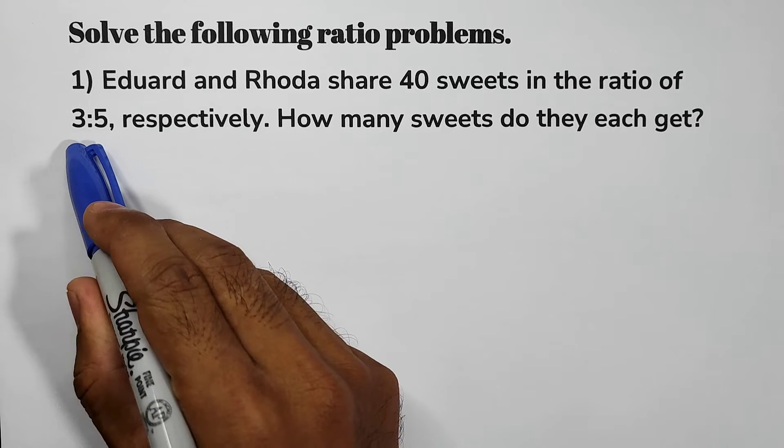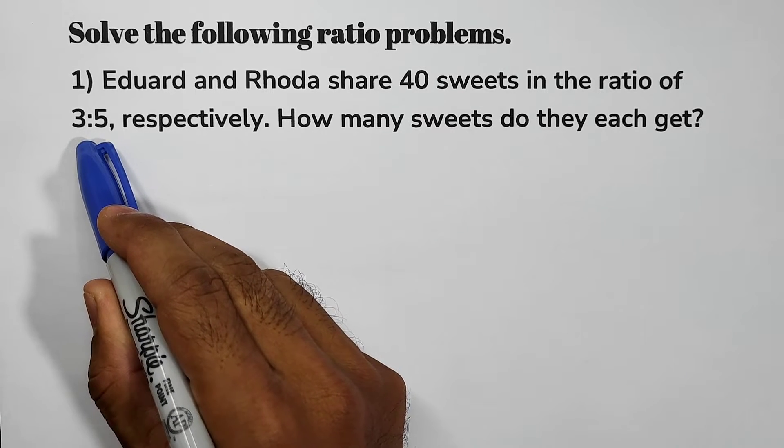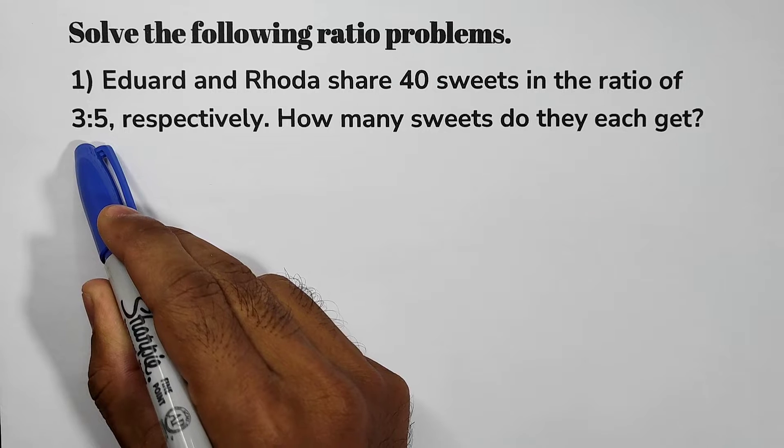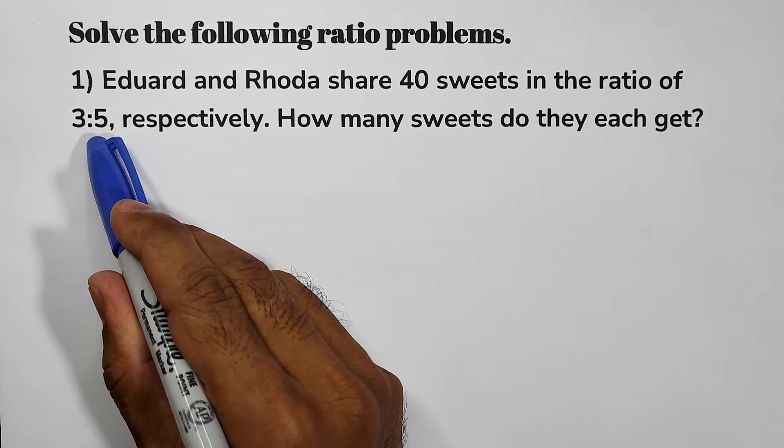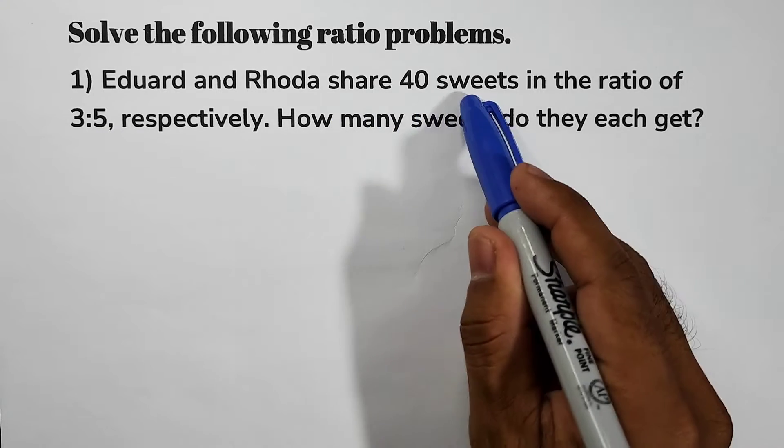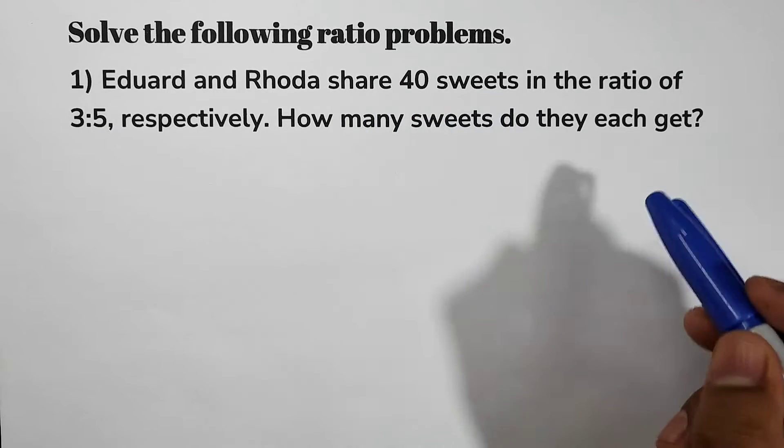3 to 5 ratio means every 3 sweets Edward gets, Rhoda receives 5 sweets. But they share 40 sweets, so how many sweets do they each get?